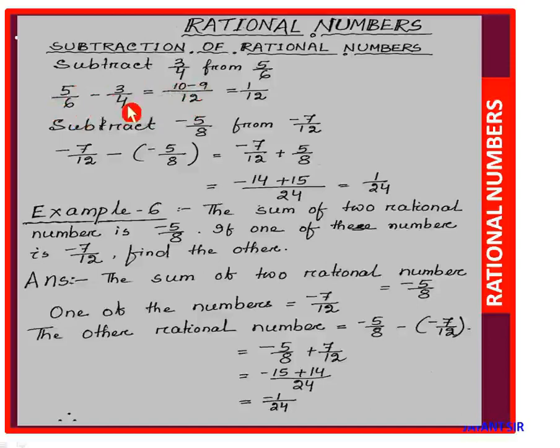12 divided by 4: 4 threes are 12, 3 into 3 equals 9. So 10 minus 9 equals 1, giving the answer 1/12.